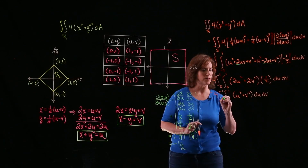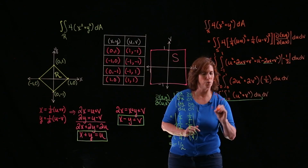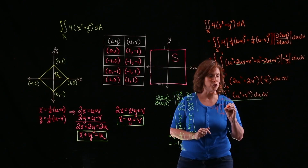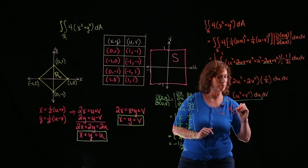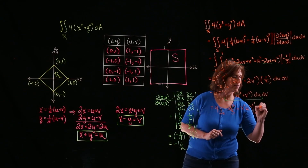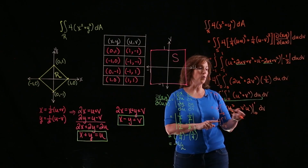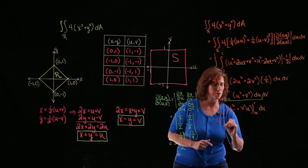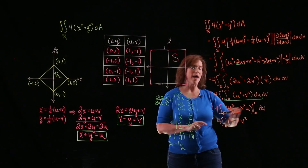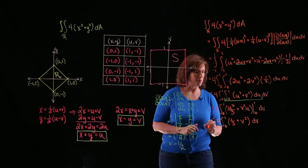Working on the inside integral first, integrating with respect to u treating v as a constant: 4 times the integral from 0 to 1 of [u³/3 + v²·u] evaluated from 0 to 1, dv. Plugging in u=1 gives one-third plus v², and plugging in 0 gives zero, so I have 4 times the integral from 0 to 1 of (one-third + v²) dv.